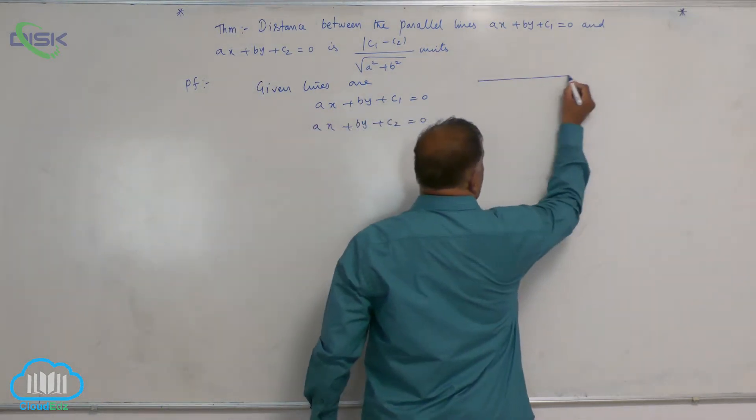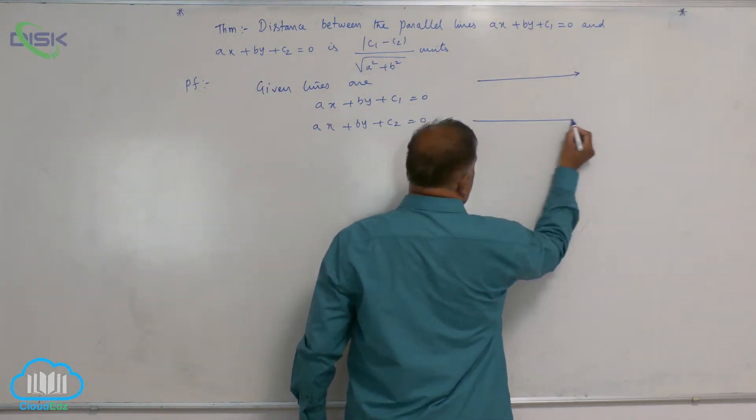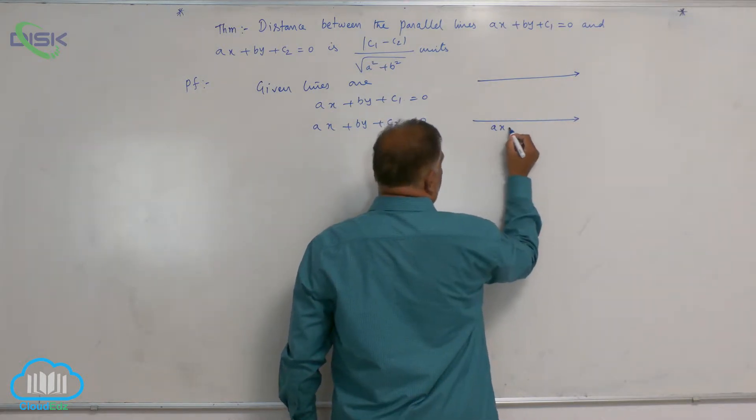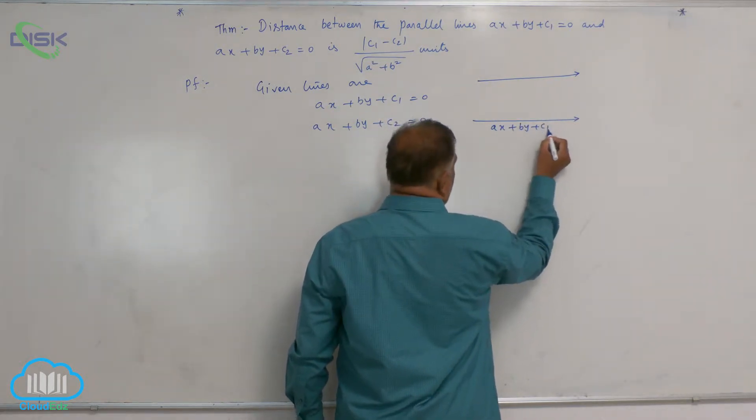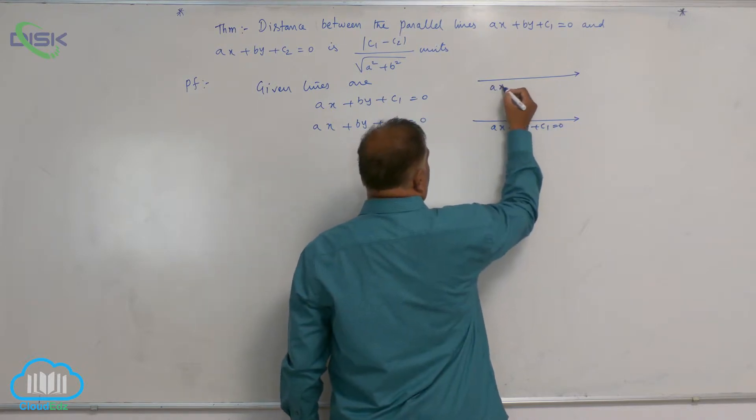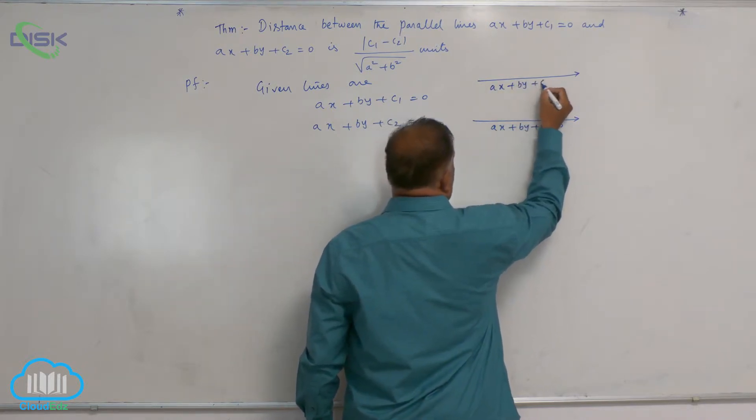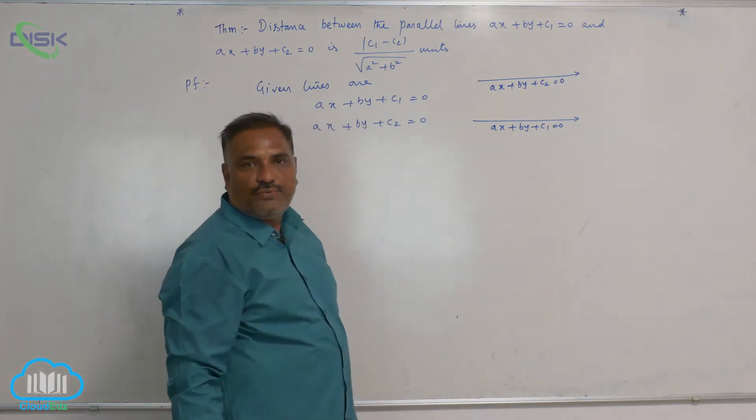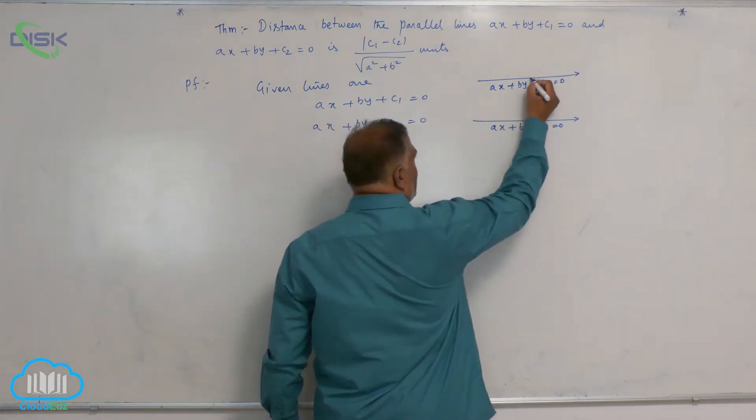Let us consider this is line number 1, this is line number 2, this is AX plus BY plus C1 is equal to 0, AX plus BY plus C2 is equal to 0. We need to find out the distance between these two.